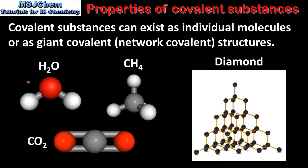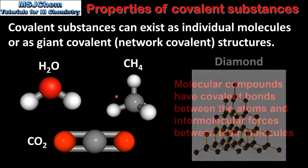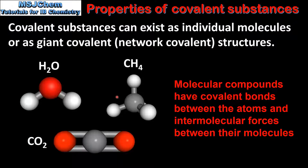Molecular compounds exist as individual molecules with a fixed number of atoms. For example, a molecule of H2O consists of two hydrogen atoms and one oxygen atom, and a molecule of methane consists of one carbon atom and four hydrogen atoms. The bonds between the atoms are covalent bonds. There are also forces of attraction that exist between molecules, which are known as intermolecular forces.